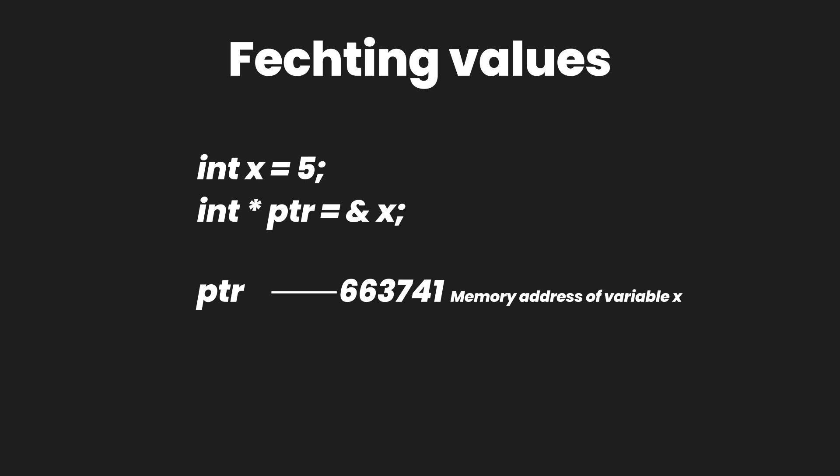To get the value, we use an asterisk symbol again, but this time around it is called the indirection symbol. Keep in mind: when you are declaring a pointer variable, the asterisk symbol is called the pointer operator, but when you are using it to get the value from the pointer variable — to get the value from the reference placed inside the pointer variable — in that particular case this operator is known as the indirection symbol.